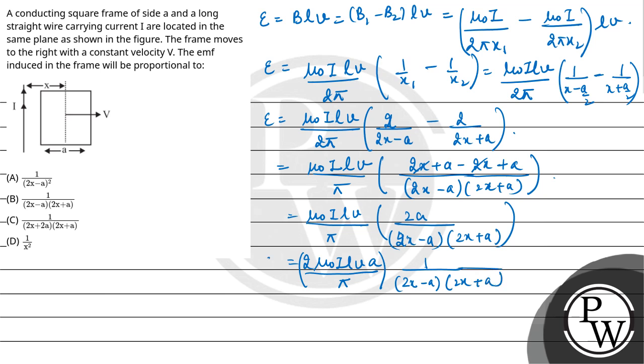That means EMF is directly proportional to 1 upon 2x minus A into 2x plus A. So our final answer is Option B: 1 upon 2x minus A into 2x plus A. Hope you understood it well. Best of luck.